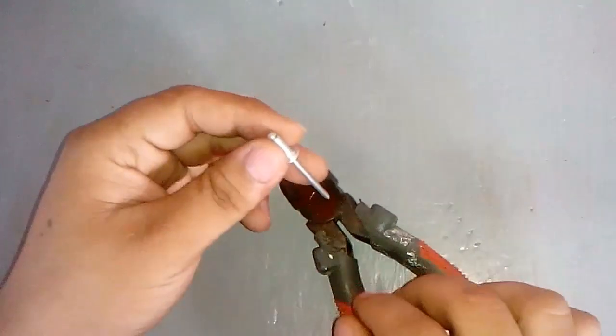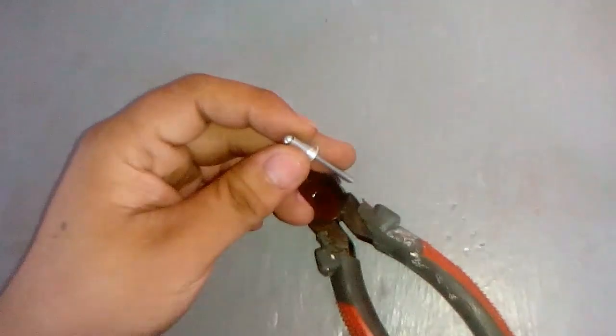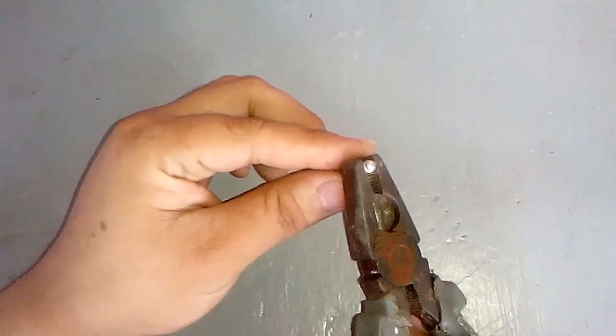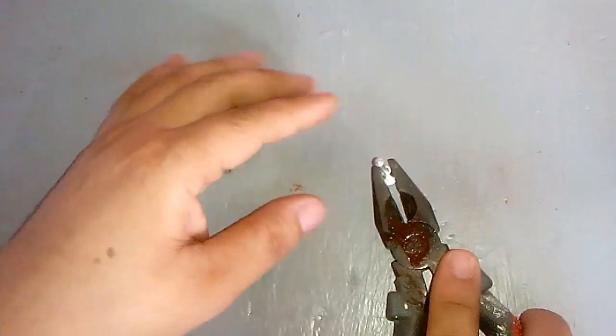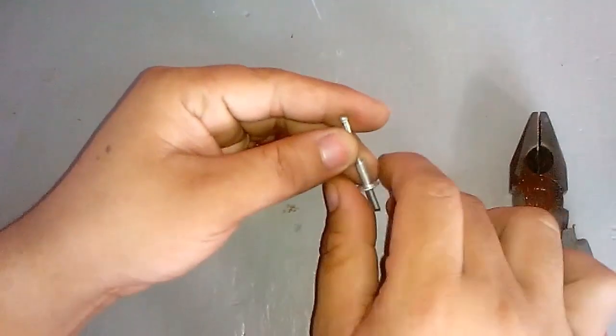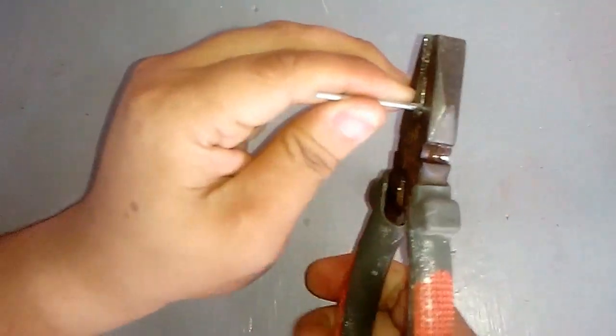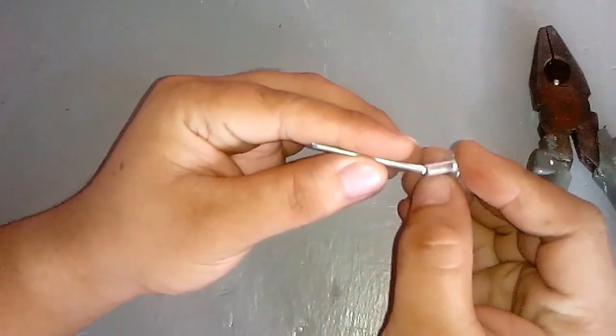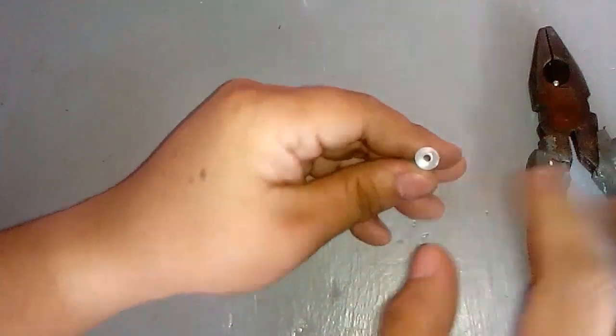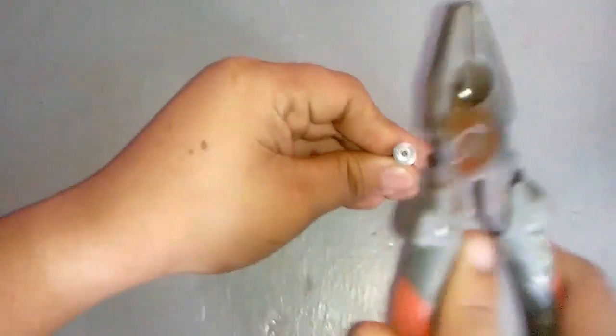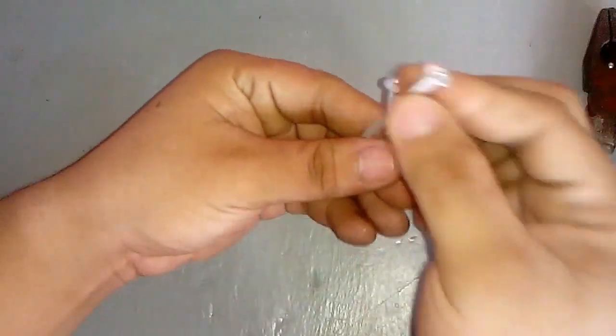In this project we will start with a four millimeter rivet. Remove the rivet pin and cut the mandrel head. Put the rivet in opposite position, it should look like this, and make two of these.